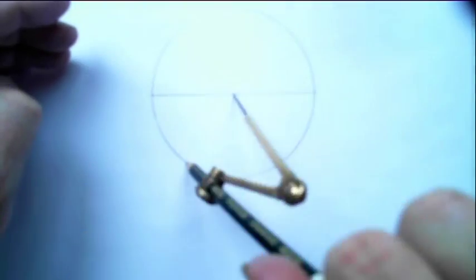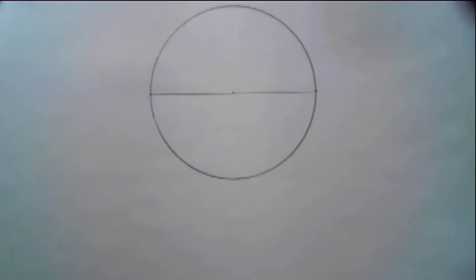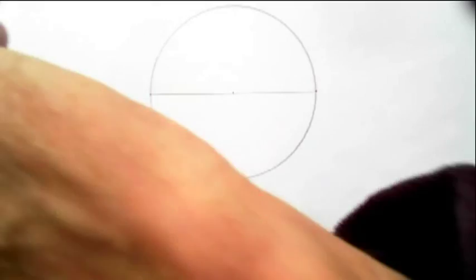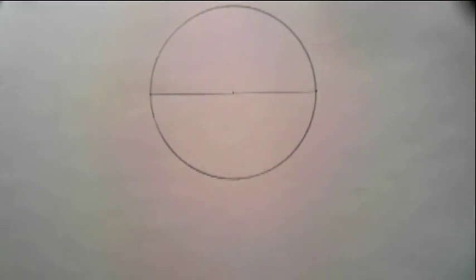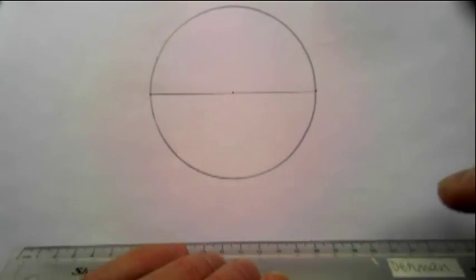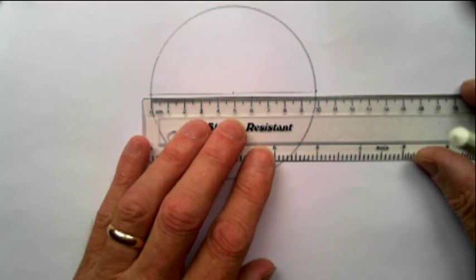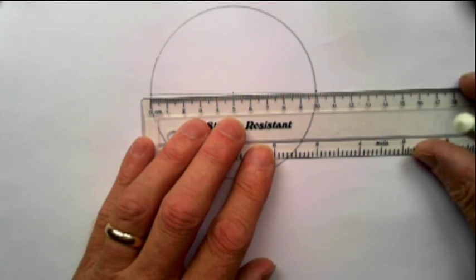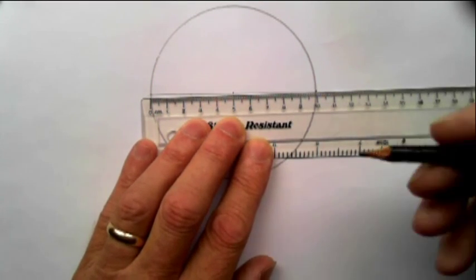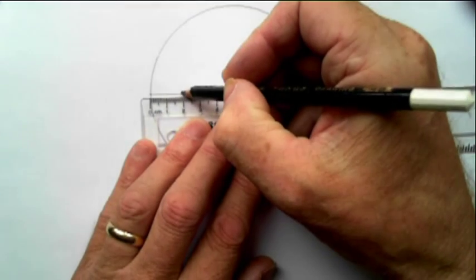Then I'm going to divide that diameter. Let's say I want to produce a five-sided polygon, simply for simplicity, a pentagon. I have to divide the diameter up into five: one, two, three, four, five.